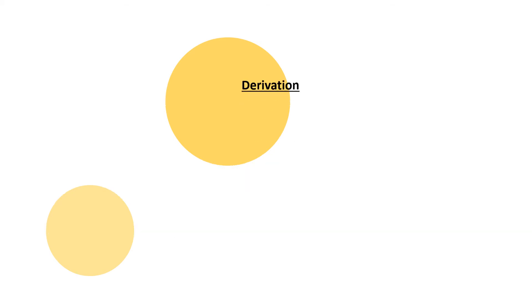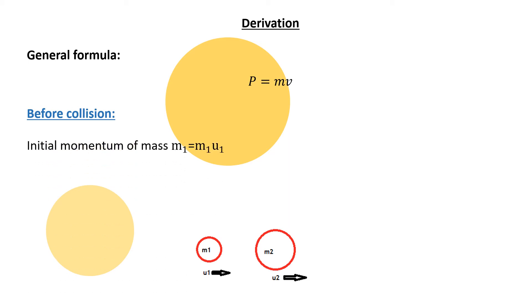So for the derivation, the general formula is momentum equals Mv. So before collision, if we look at mass M1 has velocity U1, mass M2 has velocity U2. This object is initially moved. So the initial momentum of mass M1 is M1 U1. The initial momentum of mass M2 is equal to M2 U2. This is according to the momentum formula. So if we find out total momentum, then the momentum is M1 U1 plus M2 U2.